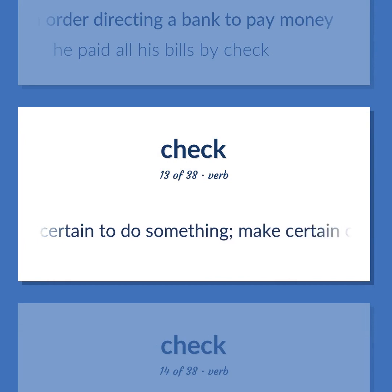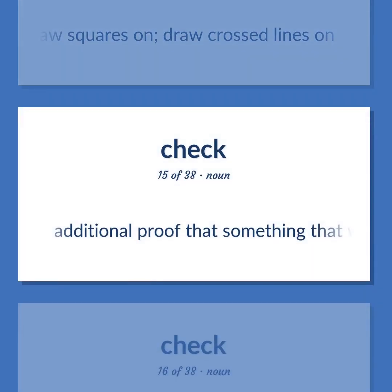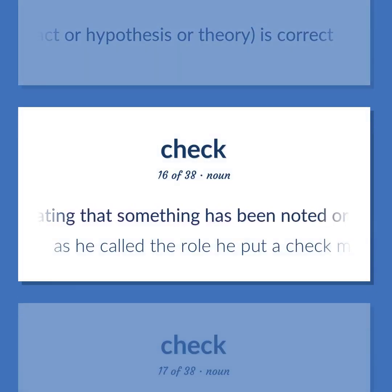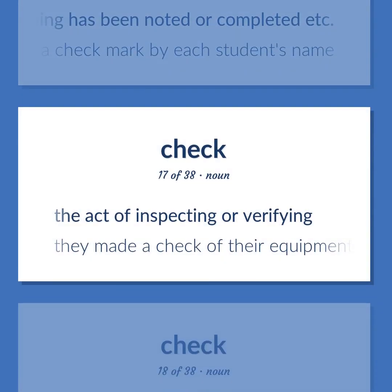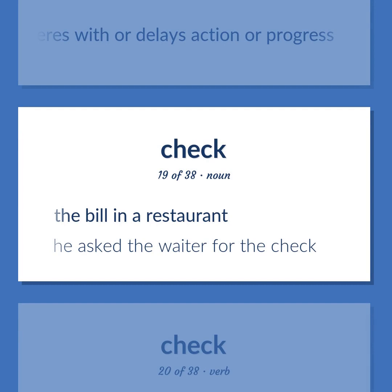Be careful or certain to do something; make certain of something. Mark into squares or draw squares on; draw crossed lines on. Additional proof that something — a fact, hypothesis, or theory — is correct. A mark indicating that something has been noted or completed: as he called the roll he put a checkmark by each student's name. The act of inspecting or verifying: they made a check of their equipment. Something immaterial that interferes with or delays action or progress. The bill in a restaurant: he asked the waiter for the check.